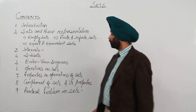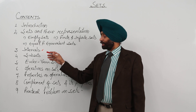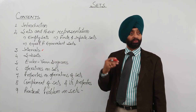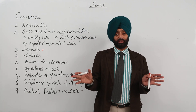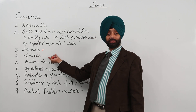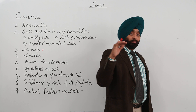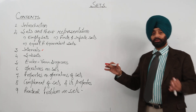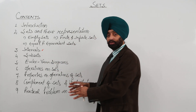Then we are covering subsets. Under subsets, we will look at comparable sets — meaning comparing two sets and finding the result of that comparison. Then we have proper subsets, power sets, and universal set. The universal set is a vast set, and many things follow from it.